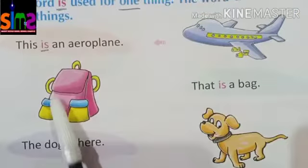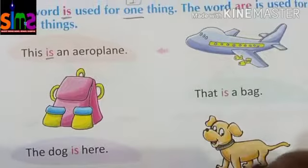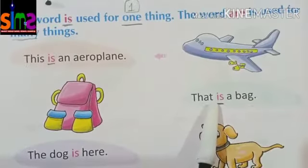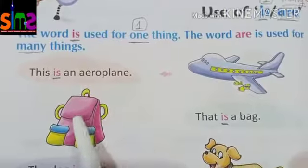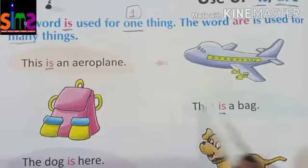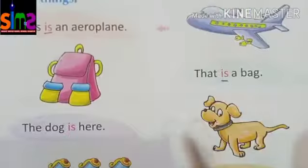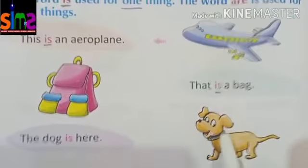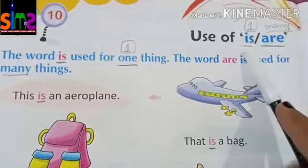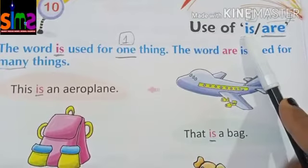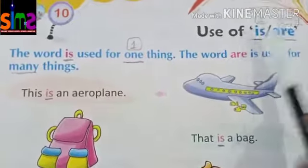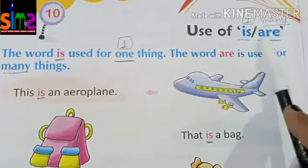Kids, what is this? This is a bag. So what is written here? 'That is a bag.' We use 'is' for one thing. If things are one thing, then we use 'is', and when things are many then we use 'are'.